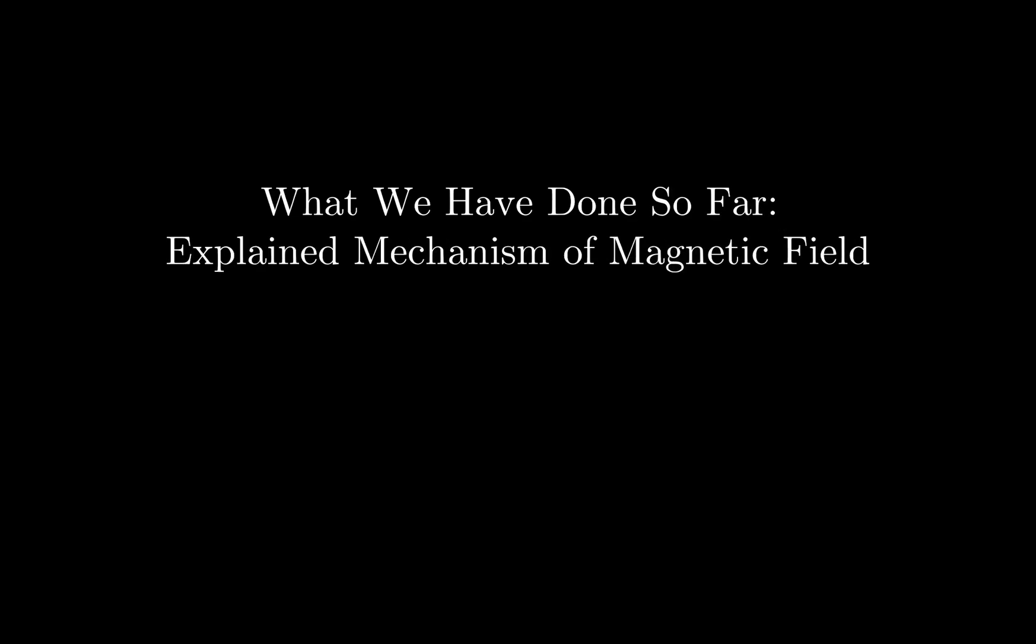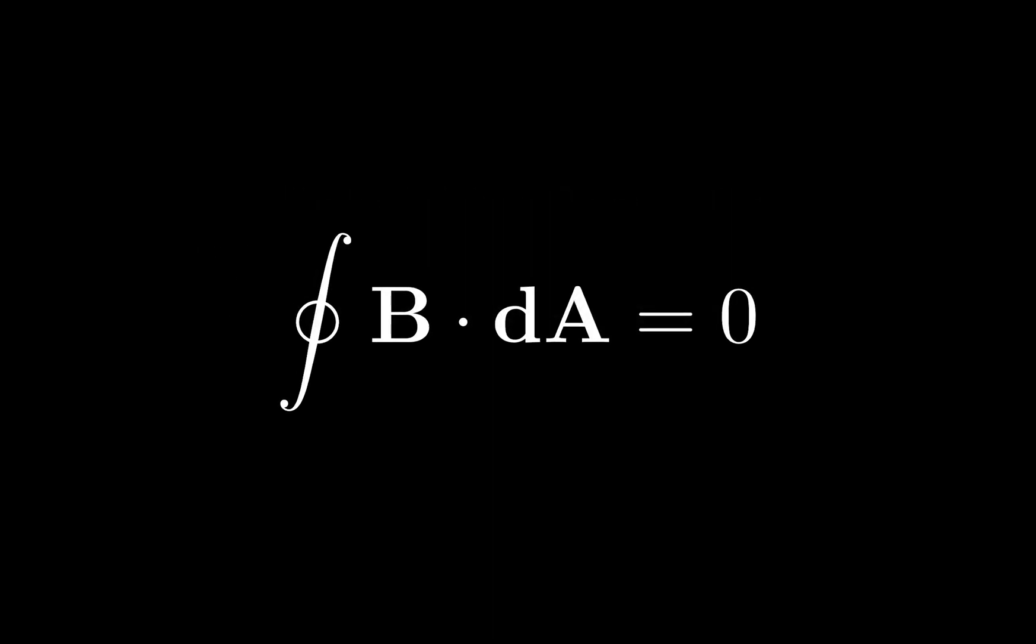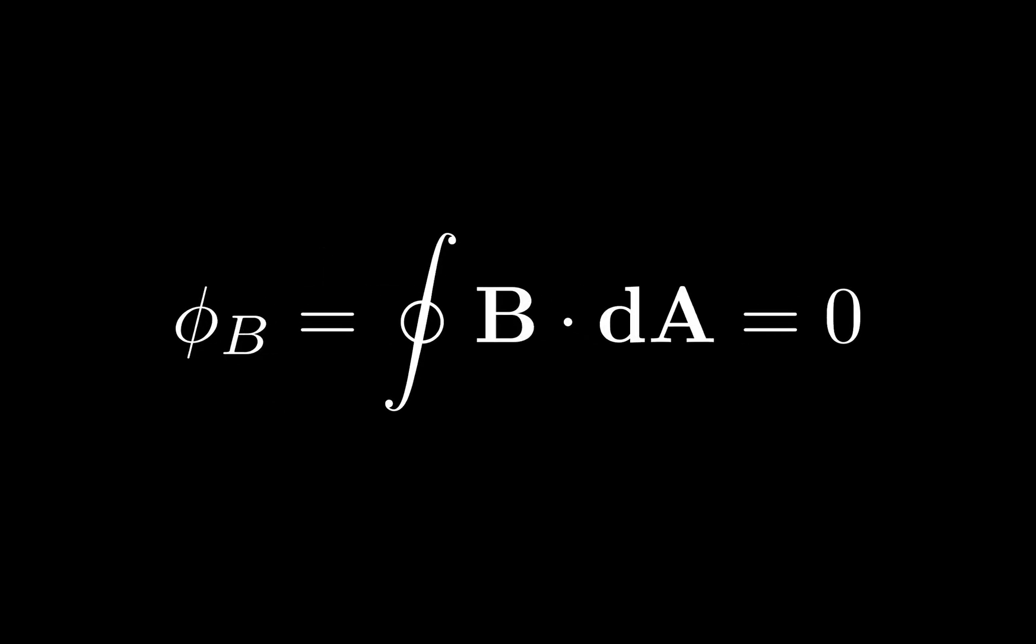So let's review what we've done so far. We've discussed the underlying mechanism for how magnetic fields are created. We've also explained what they do to charges. That means we are now ready to tackle the integral form of Gauss's law for magnetism, which says that the integral of a magnetic field dotted with vectors perpendicular to the surface area of a closed surface, in other words, the magnetic flux through a closed surface, is always zero.